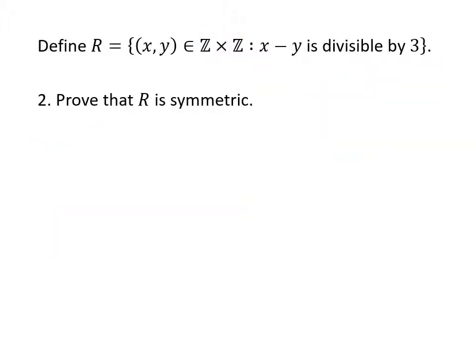Next up, we want to prove that R is symmetric. So symmetric is an if-then. So symmetric means if (a,b) is in my relation, then (b,a) is also in my relation. Visually, what this means is that all of the arrows in my relation are double arrows. Every time I have an arrow from a to b, I also have an arrow from b back to a.